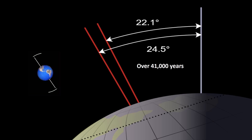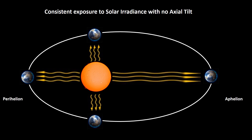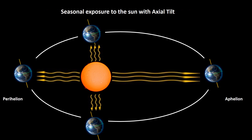In the first instance, obliquity explains how we have seasons, and why currently the Northern Hemisphere experiences summer when it is furthest from the Sun. If the actual tilt did not exist, then each location on the Earth would experience an almost consistent amount of solar irradiance throughout the annual cycle. There would be a slightly increased solar irradiance when the Earth approached the perihelion, but this would not amount to anything like the seasonal change we currently experience. Because of obliquity, the Northern and Southern Hemispheres experience varying amounts of solar irradiance as the Earth goes through its orbit.